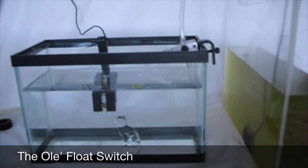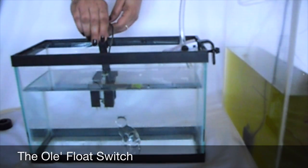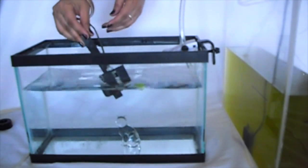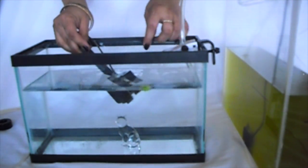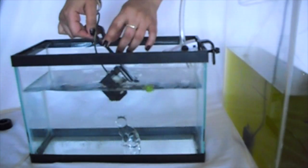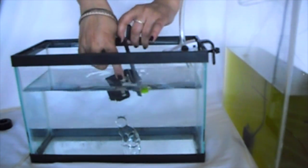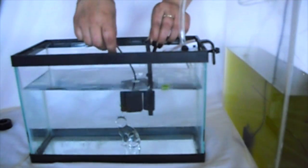Let's talk about the old float switch. I don't know about you, but this guy has malfunctioned on me several times, flooding my tank with fresh water and messing up my salinity. A snail can get caught, there's algae, debris, deposits that can really make this thing stop working.